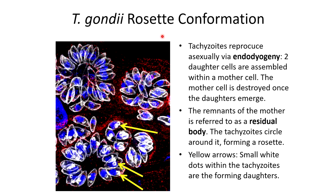Something interesting to go over is the T. gondii rosette conformation. Whenever the tachyzoites reproduce asexually via endodyogeny, two daughter cells will be assembled within a mother cell. Here in the yellow arrows, the very two small white dots are two daughter cells being formed from a mother cell. Once the daughter cells emerge, the mother cell will actually be destroyed. The new daughter cells then form a circular structure known as the rosette conformation around the mother cell — the dead mother cell is referred to as a residual body. It's thought that they can take some nutrients from this remnant body. This is unique to T. gondii and is something you'll only see within the intermediate host.